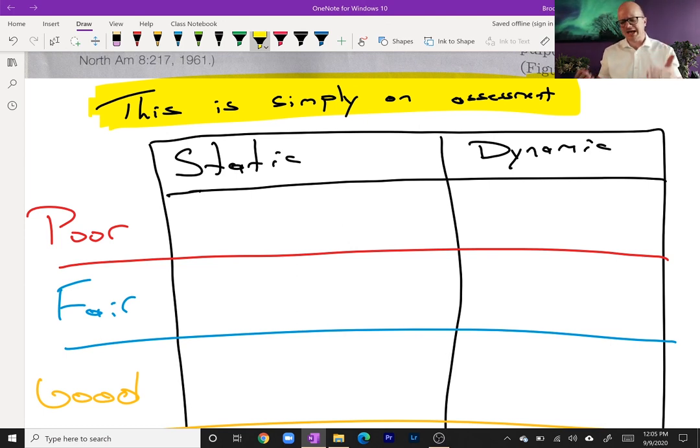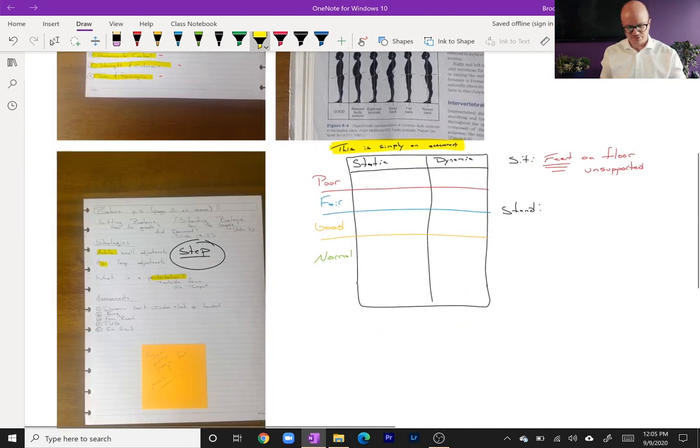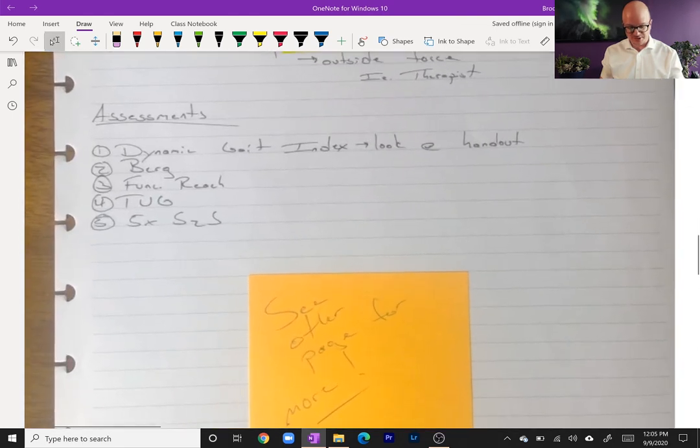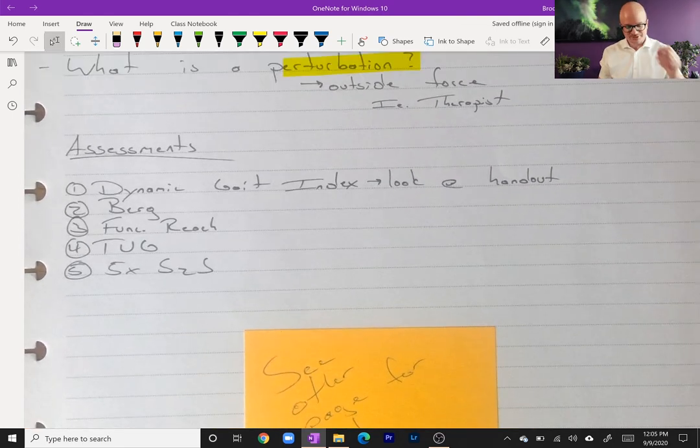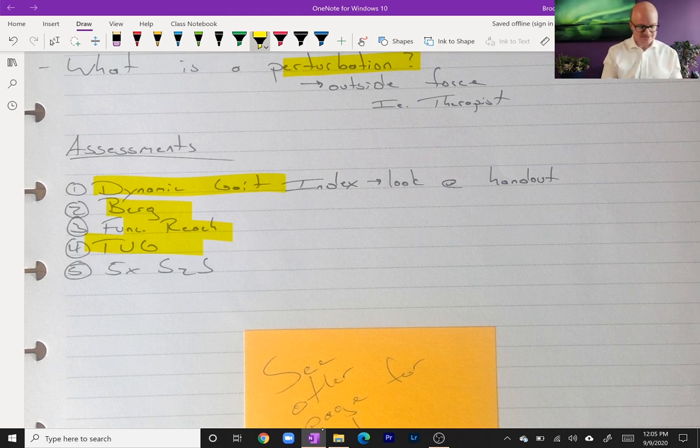With this, you're taking into consideration maybe patient age and ability levels and things like this, whereas something like over here—let's get back to the more objective assessments—Dynamic Gait Index, I mean there's a specific handout and a way to score those things. The Berg Balance, the Functional Reach, the Timed Up and Go, Tinetti's Test—there's a lot of different actual objective assessments.